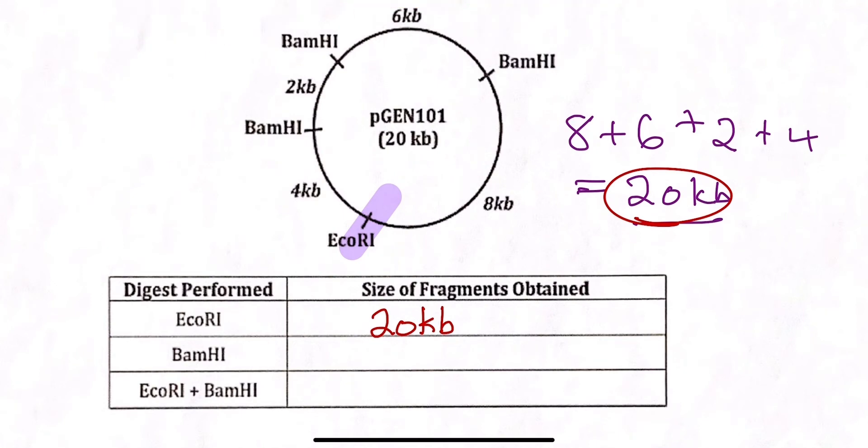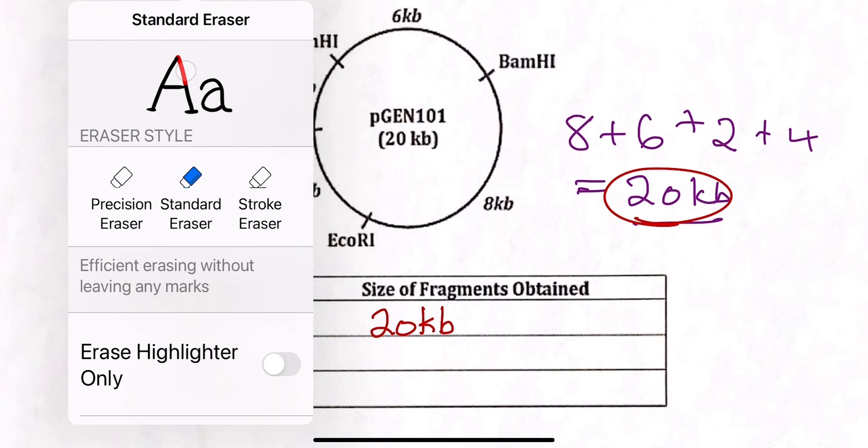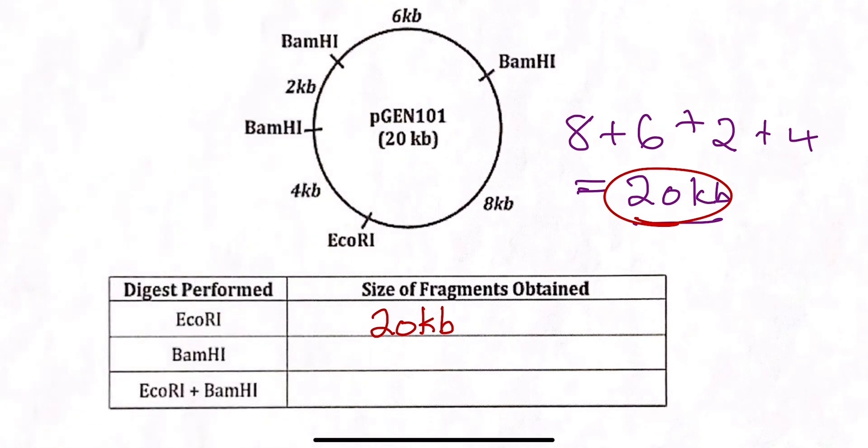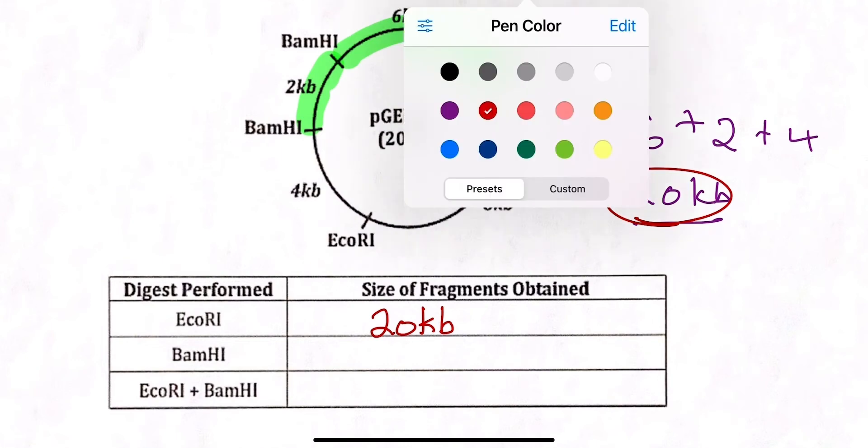All right. So next up, let's look at BamHI. What do we see here that the BamHI restriction enzyme can create? Well, we see that if we put it in there, we can have a 2 kb. We see that we can have a 6 kb and we see that we can have also a 12 kb. So we're ignoring. So let me draw a little line over this so that helps.